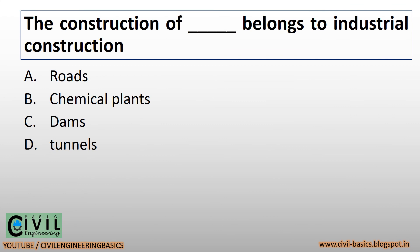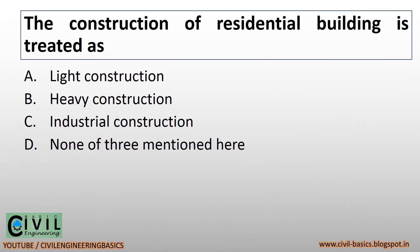The construction of chemical plants belongs to industrial construction. The construction of residential buildings is treated as light construction.